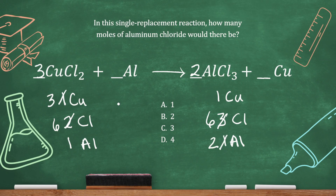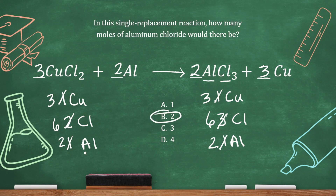Now let's balance the copper. I need 3 on this side — easy fix. So I've got 3 coppers on both sides. On this side I need 2 aluminum — also an easy fix. And now I'm completely balanced. So how many moles of aluminum chloride would there be? This is aluminum chloride — no other part of the equation has aluminum and chlorine together — so there are 2 moles of aluminum chloride.